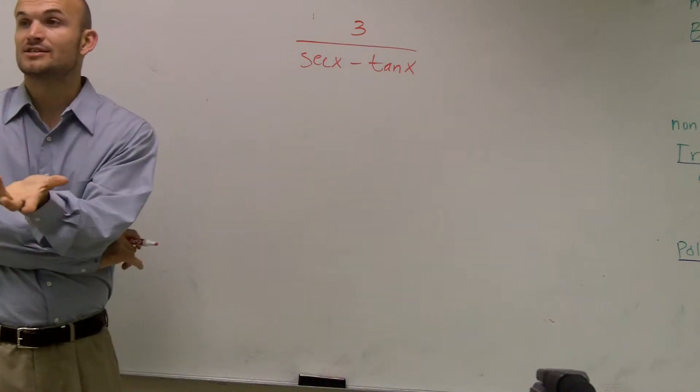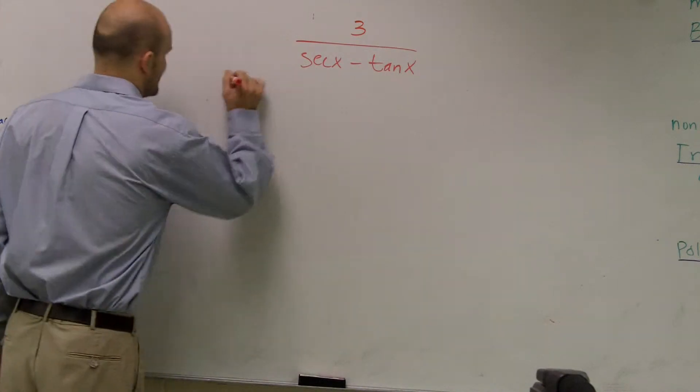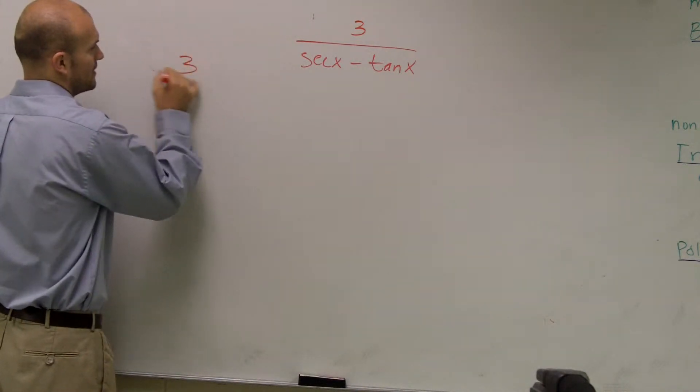One thing is looking for your Pythagorean identities, which this doesn't have. Next thing is to look at sines and cosines. See if we can do anything with sines and cosines, and we can't really do anything directly with sines and cosines.